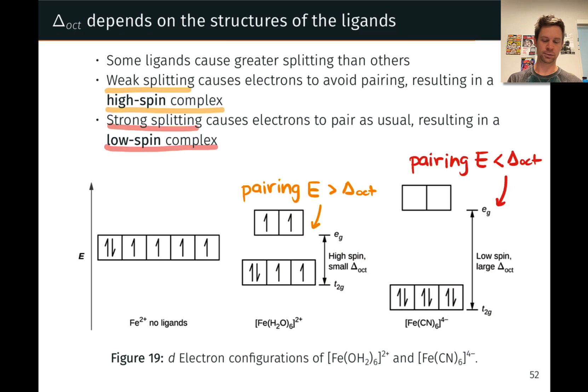And so now we can see why in this case where delta oct is relatively large, this is called a low spin complex since the net spin here is zero. On the other hand, when delta oct is relatively small, well now I've got four unpaired electrons, a total spin of plus two. This is what we'll call a high spin complex.